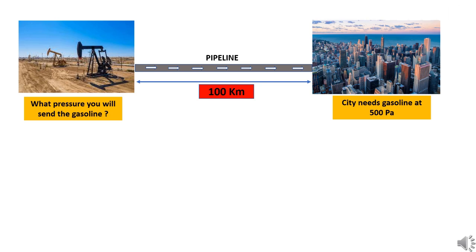Consider a situation where you have to send the oil to a city 100 kilometers away through a pipeline. If the city needs oil at 500 pascals, at what pressure will you send the oil? If you send the oil at exactly 500 pascals, then what will happen? We have seen there will be pressure head loss when fluids flow through pipe.